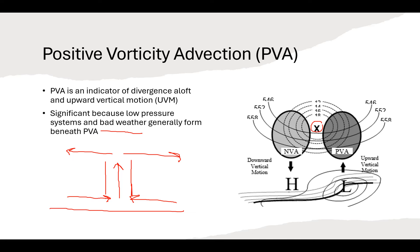Remember what the X represents — that's your vorticity maximum, the location where the vorticity values are reaching their highest positive values. Notice what's ahead of this vorticity maximum — we have an area of PVA or positive vorticity advection. And then behind this vort maximum, we have negative vorticity advection at 500 millibars. Beneath the area of PVA, we have this area of low pressure at the surface. And beneath this area of NVA, we have downward vertical motion associated with high pressure at the surface, so fair weather beneath the NVA and bad weather underneath PVA.